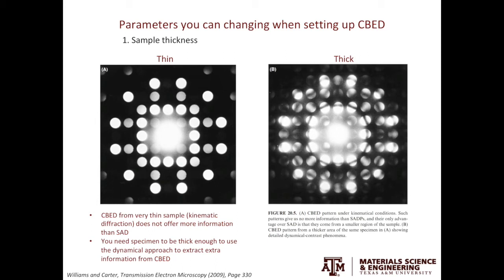In order to make CBED patterns — convergent beam electron diffraction patterns — bear more information, you need the specimen to be fairly thick, definitely more than one mean-free path. This condition is very similar to that which you set up for Kikuchi lines acquisition.